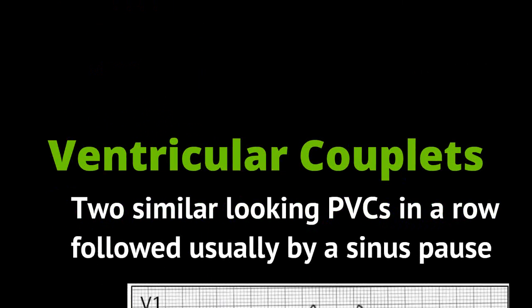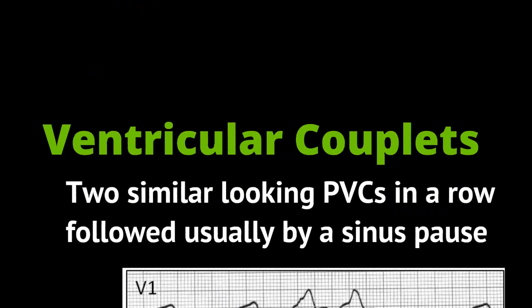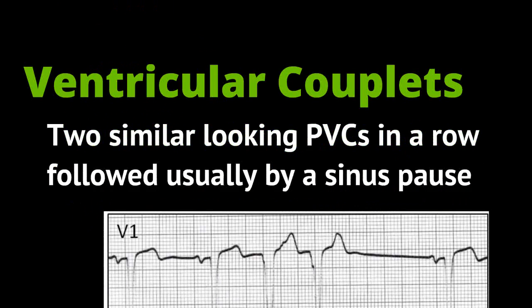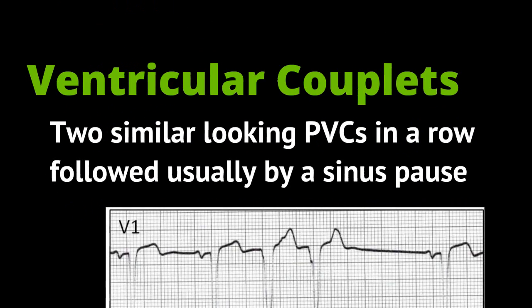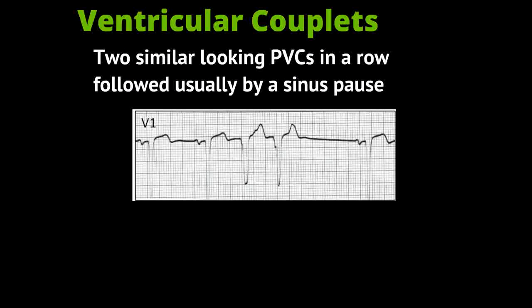Ventricular couplets are when there are two similar-looking PVCs in a row, usually followed by a sinus pause. You'll see here in this strip two wide QRS complexes, each being a PVC that look very similar, and a small pause that occurs after them. This is a ventricular couplet.